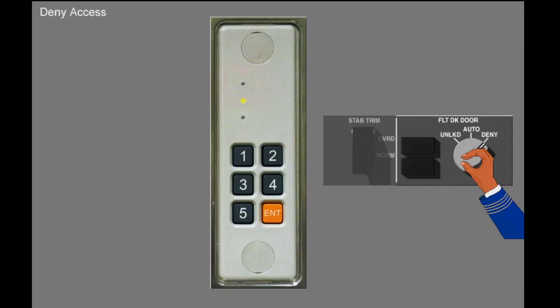In the deny position, the amber auto unlock light extinguishes and the red light illuminates on the emergency access panel. The keypad is also disabled for a set time delay.